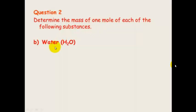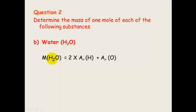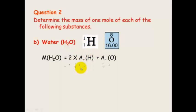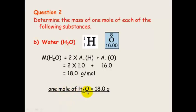The mass of 1 mole of water: the molar mass of water equals 2 times the relative atomic mass of hydrogen, because there are two hydrogens, plus 1 times the relative atomic mass of oxygen. Looking at the periodic table, the relative atomic mass of hydrogen is 1, so we need 2 × 1; and the relative atomic mass of oxygen is 16, so we need 1 × 16. That equals 18.0 g mol⁻¹. This means that 1 mole of water will weigh 18.0 grams.